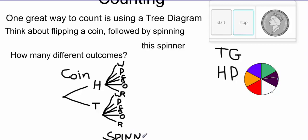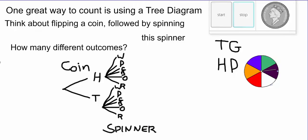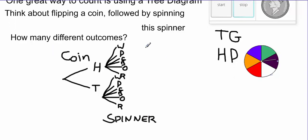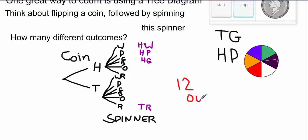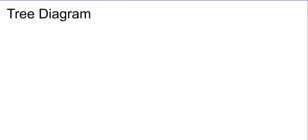The first level of our tree represents the possibilities of the coin, and the second level represents the possibilities of the spinner. This tree has two levels because there were two simple events making up this complex event. By reading down the branches from the start, we get outcomes like heads-white, heads-purple, heads-green, and so on all the way down to tails-red. After writing all those out, we see there are 12 outcomes, and we have a nice list of what those 12 outcomes are.